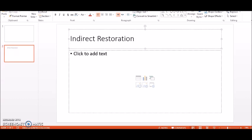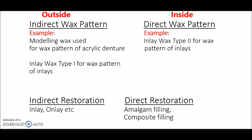An indirect restoration is a restoration that is not fabricated directly in the oral cavity; rather, it is made and designed on a dental cast in a lab. Once the restoration is designed and ready, it is then cemented into the patient's tooth structure.